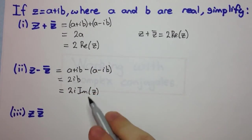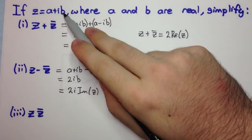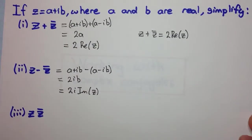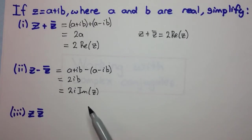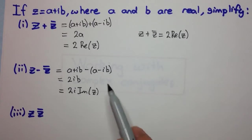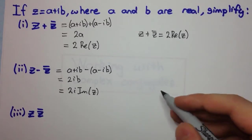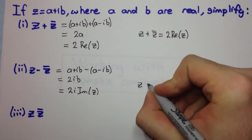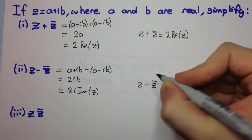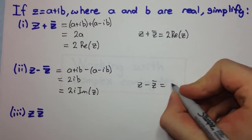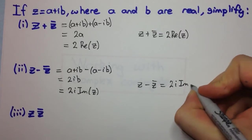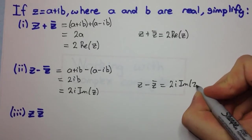The imaginary part of z is b, because it's being multiplied by i. Remember, the imaginary part of z is not ib, it's b, because it's being multiplied by i. So in general, we have z minus z bar equals 2 times i times the imaginary part of z.